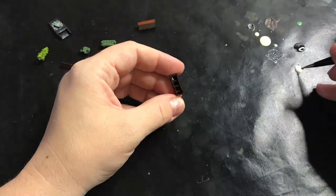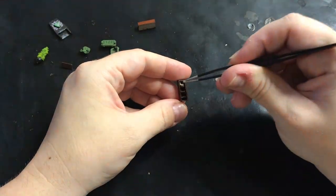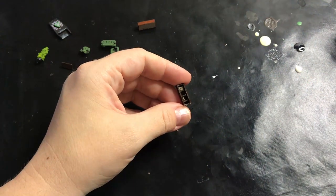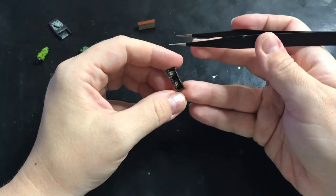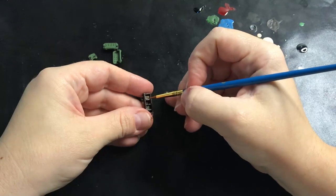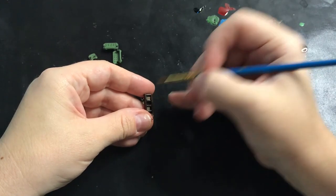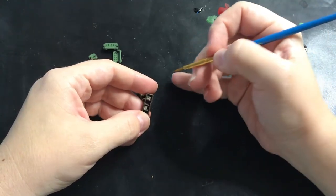Of course we cannot forget to add books to the bookcases because it's a bookcase, after all. Just adding tiny little pieces of cardstock or cardboard. I think I used cardboard, thicker cardboard, to get the thickness of the books, then painting them in various colors with acrylic paint, and then the books are done.